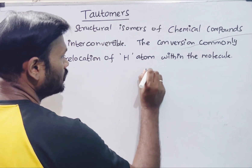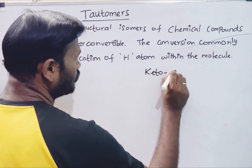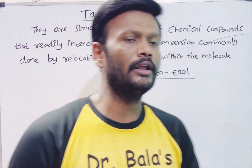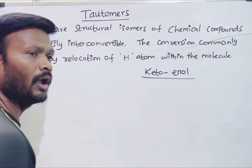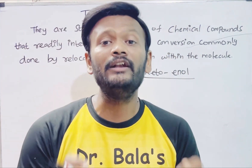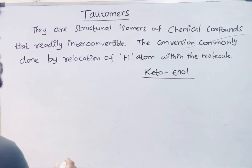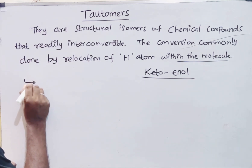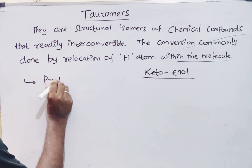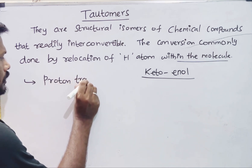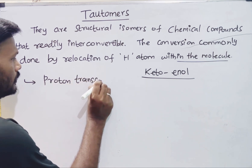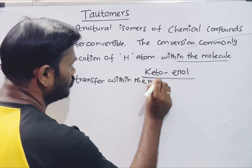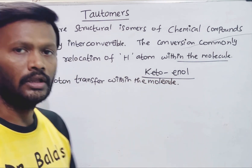Tautomers — keto-enol tautomerism. The first condition is proton transfer within the molecule. Within one molecule, there is a proton transfer. This is the first condition.